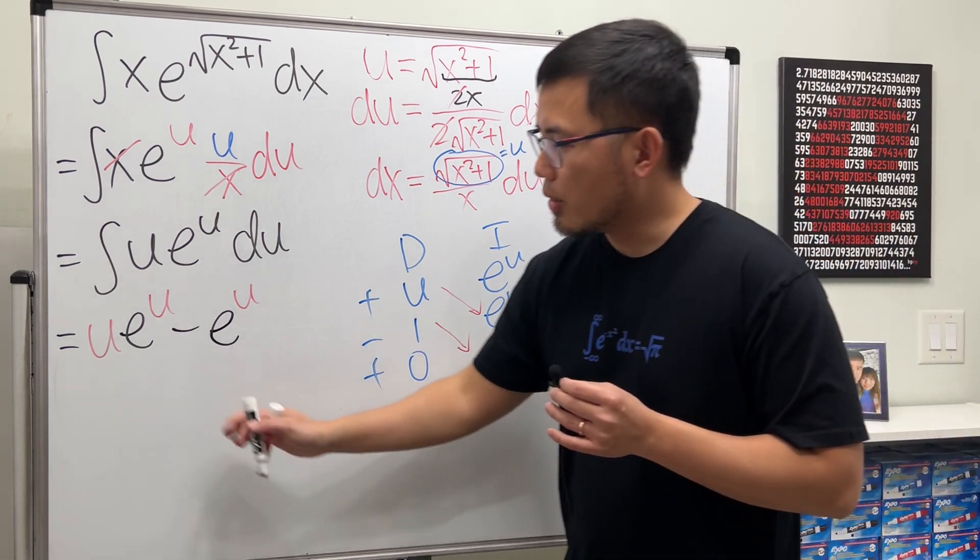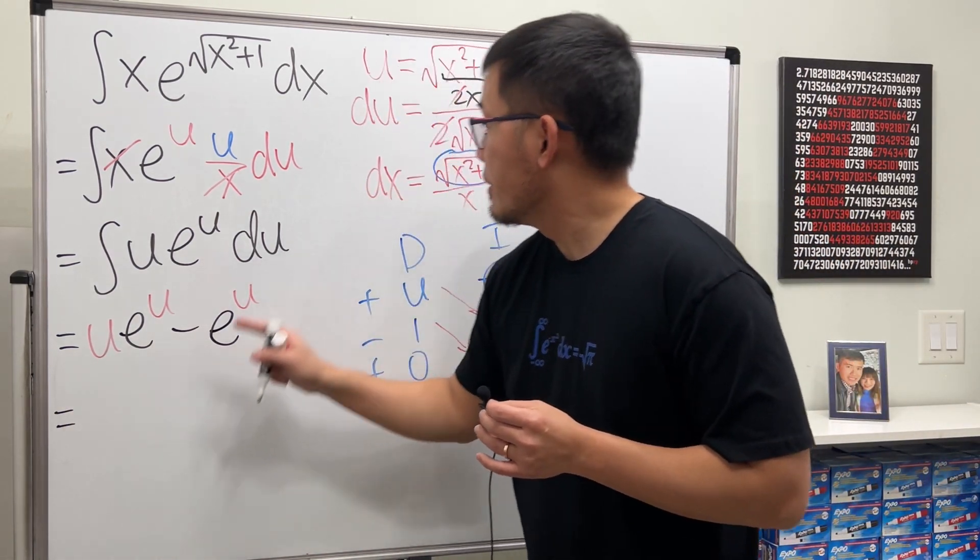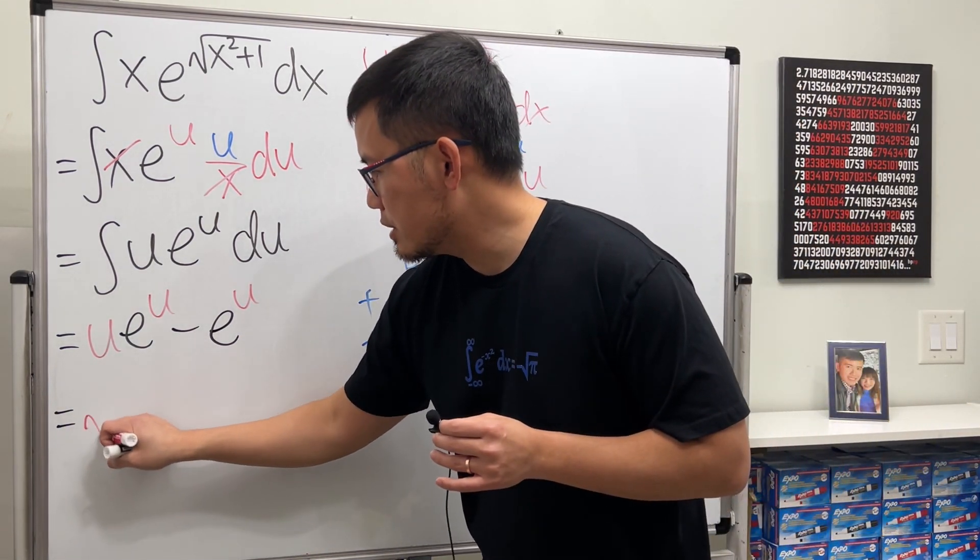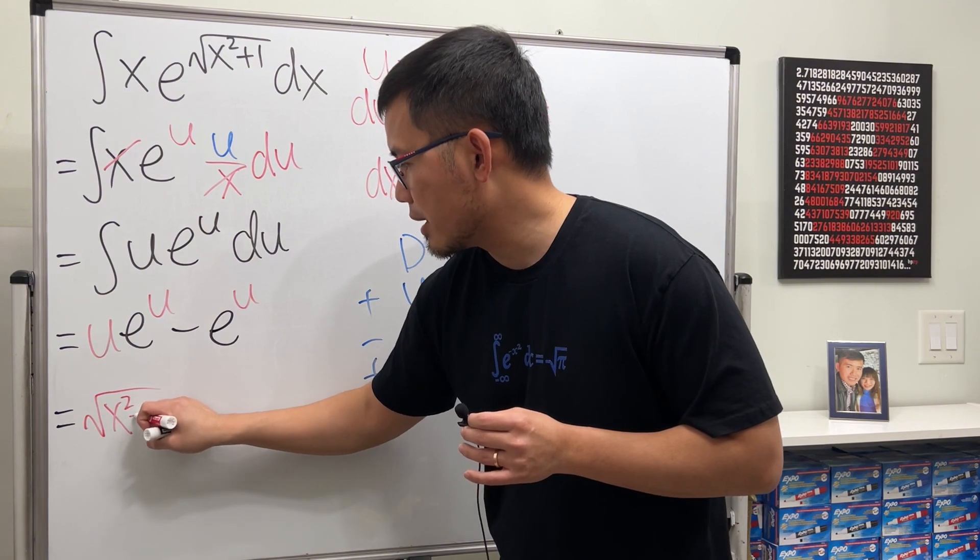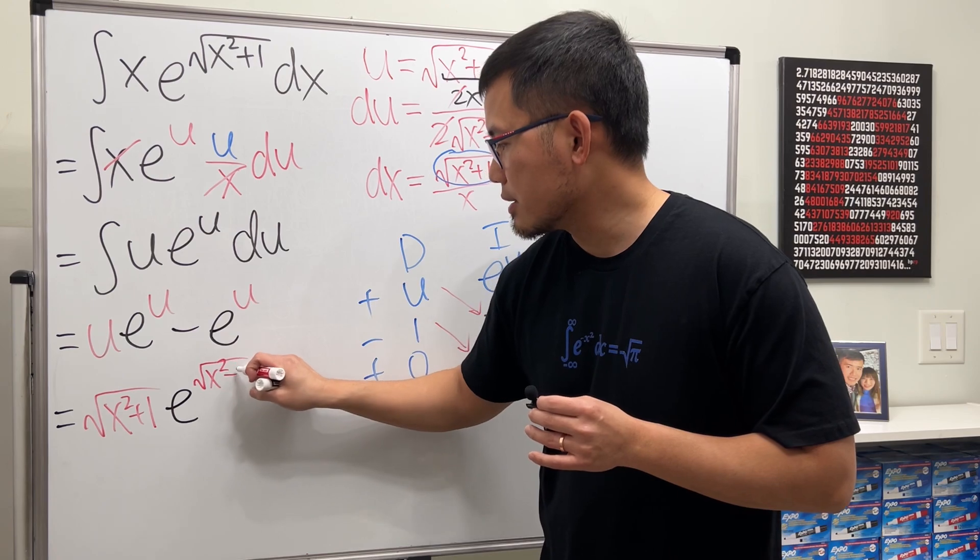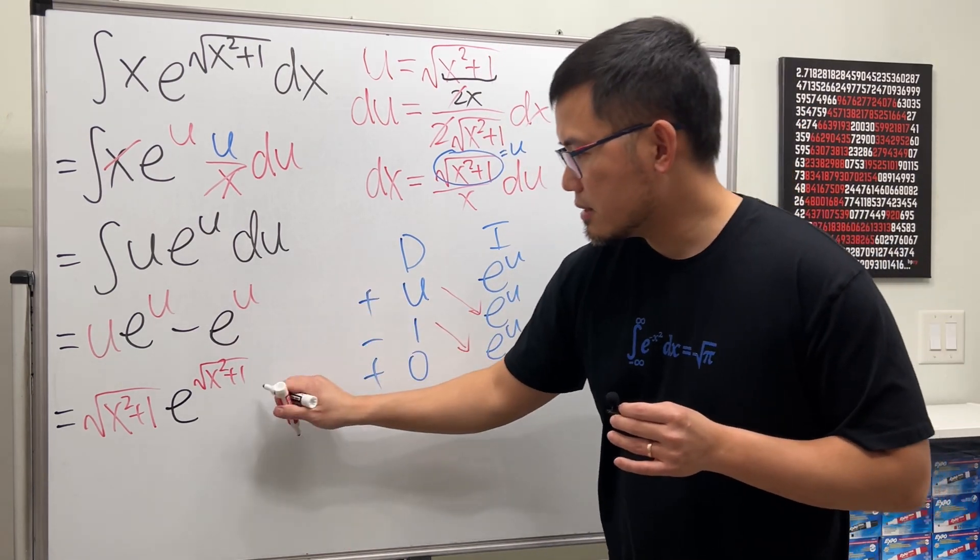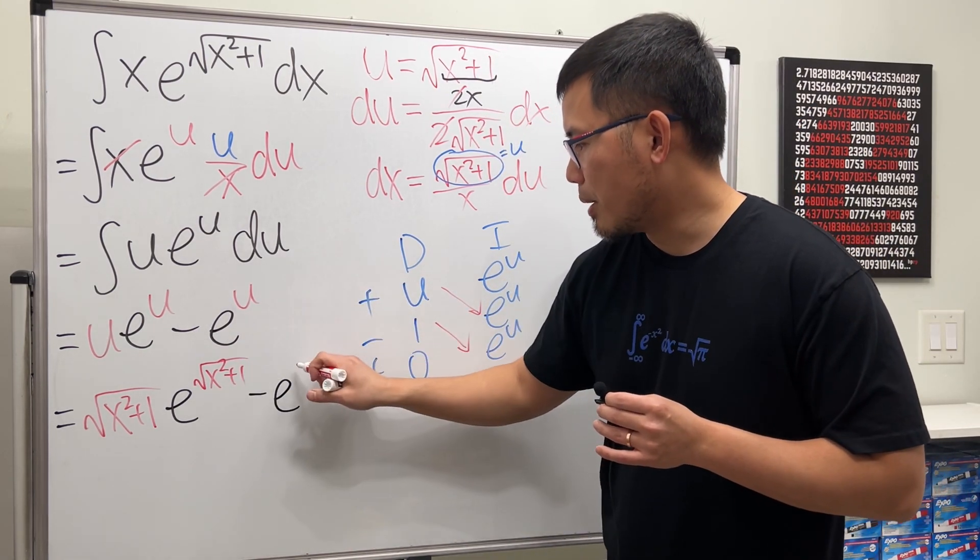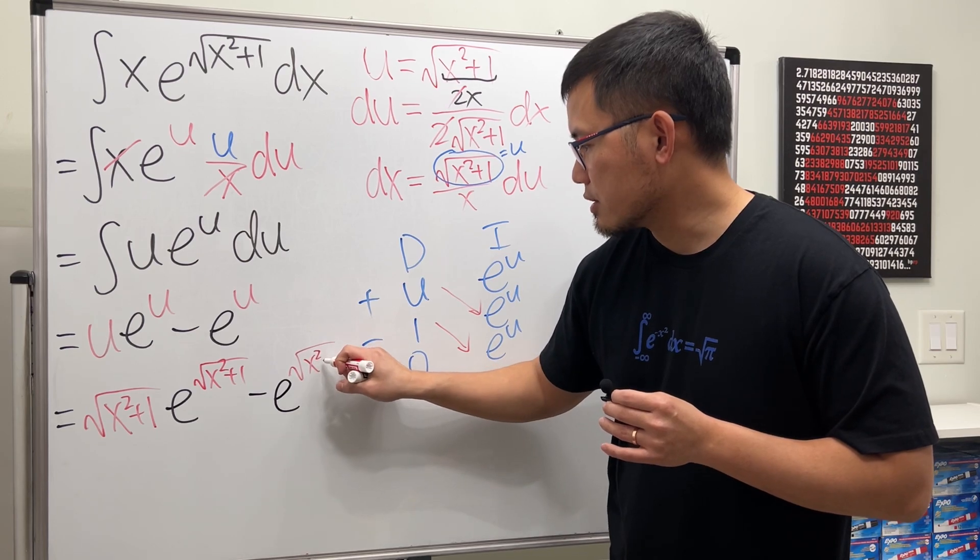Finally, we just have to go back to the x world. So this u is that, so square root of x squared plus 1 times e raised to the power of square root of x squared plus 1, and then minus e to the u power which is square root of x squared plus 1.